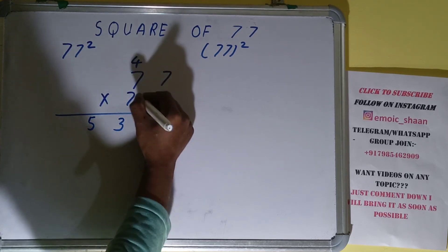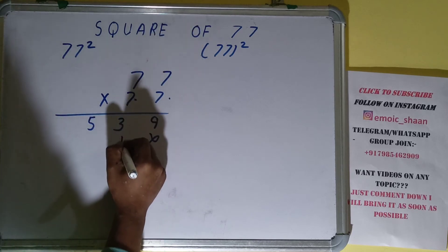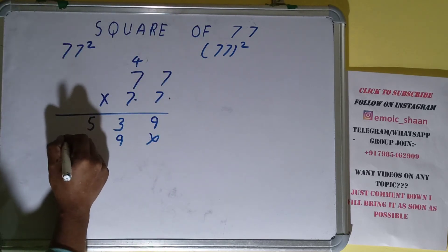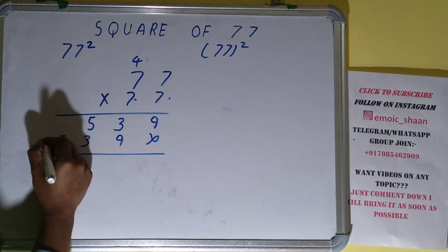Now with this 7, 7 times 7 is 49. 9 over here, 4 carry. 7 times 7 is 49 plus 4 is 53. Now add them all.